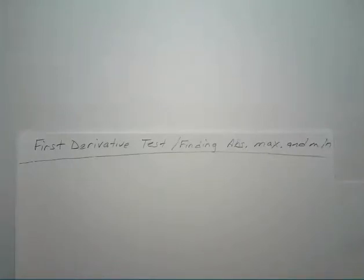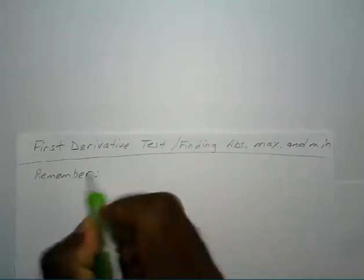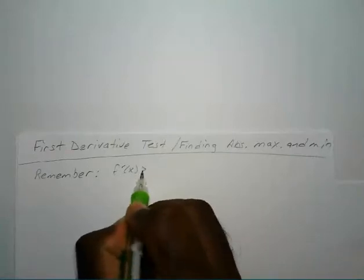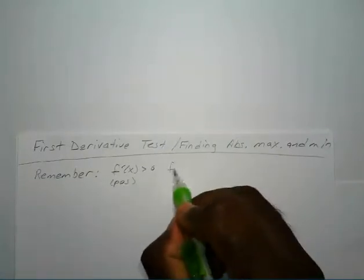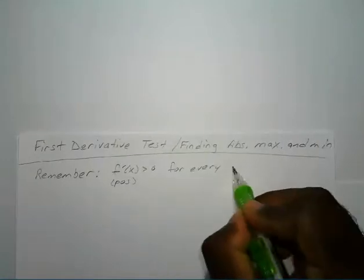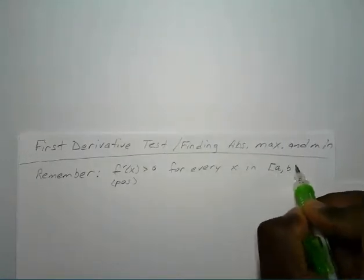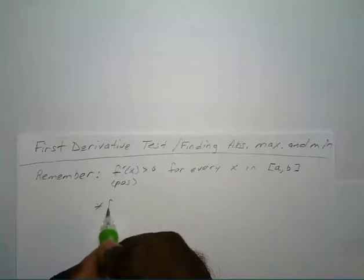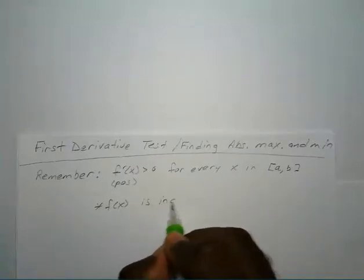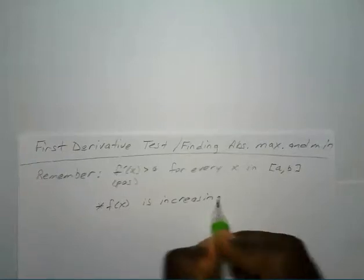Hello everyone. In this video we will be looking at the first derivative test and finding the absolute minimum and maximum values. When your first derivative is greater than zero, that means you have a positive slope for every x in the interval from a to b, and it shows that your function is increasing for that interval.